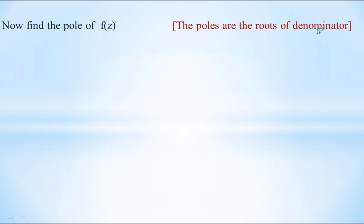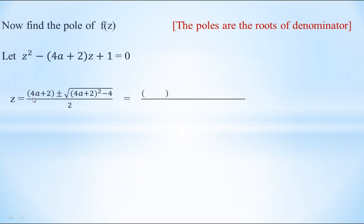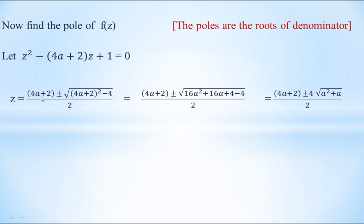The poles are the roots of the denominator. Setting the denominator equal to 0 and solving: this is of the form az² + bz + c = 0, so using the quadratic formula z = [−b ± √(b² − 4ac)] / (2a). We get z = [(4a+2) ± √((4a+2)² − 4)] / 2, which equals [(4a+2) ± √(16a² + 16a + 4 − 4)] / 2.